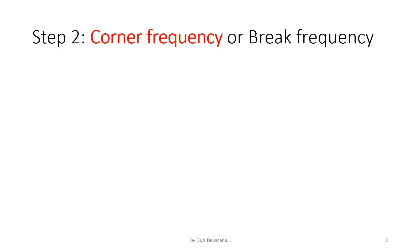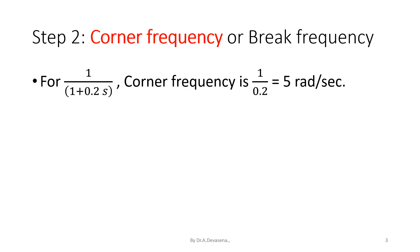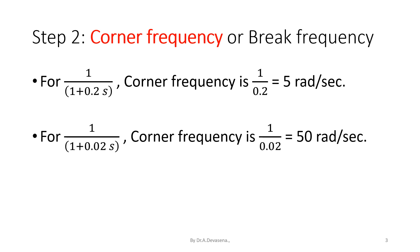Now we are going to determine the corner frequency or breakover frequency. In this given problem, we have the factor 1 divided by (1 + 0.2s). For this factor, the corner frequency is 1 divided by 0.2, that is 5 radians per second. The next factor 1 divided by (1 + 0.02s) has the corner frequency 1 divided by 0.02, that is 50 radians per second.